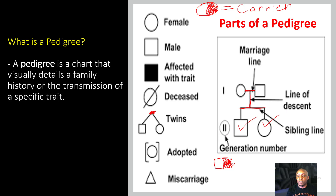And if you look on the left-hand side, these Roman numerals represent our generation number. So mom and dad represent generation one, and then the brother and the sister represent generation two, or the second generation. And that's pretty much the basics of pedigrees.